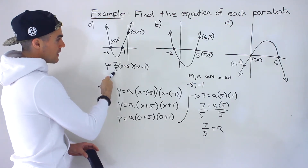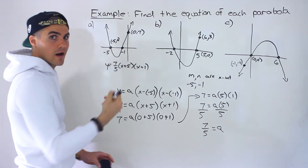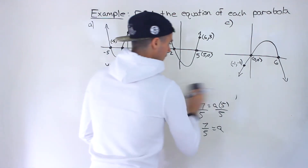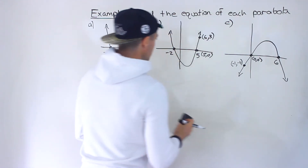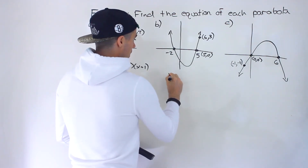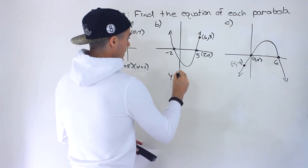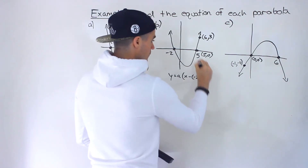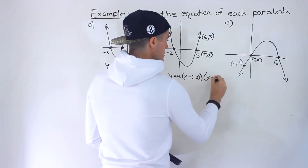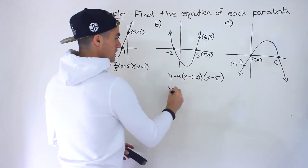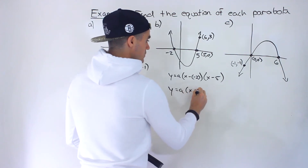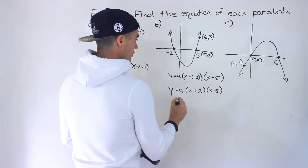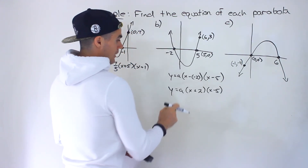For part b, the x-intercepts are negative 2 and positive 5. So we write y = a(x - (-2))(x - 5), which gives y = a(x + 2)(x - 5). Then we can plug in the other given point (6, 3) to solve for the a value.